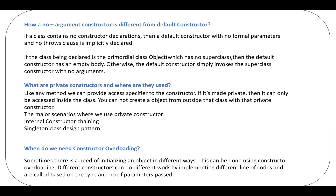What are private constructors and why are they used? Like any other method, we provide access specifiers to constructors as well. If a constructor is made private, it can only be accessed from within the same class — you cannot create an object from outside the class with a private constructor. The major scenarios where we use private constructors are: one, internal constructor chaining; and two, the singleton class design pattern, where you don't want to allow other classes to create an object for that class.